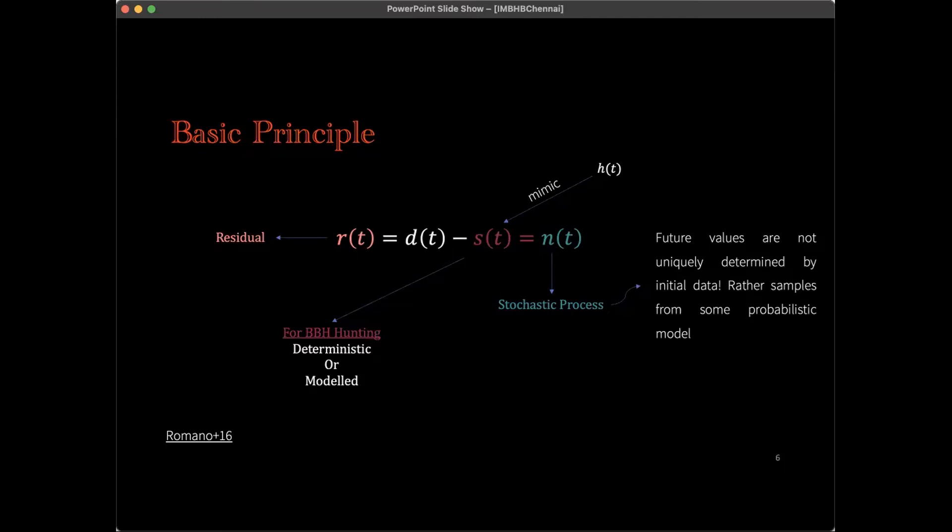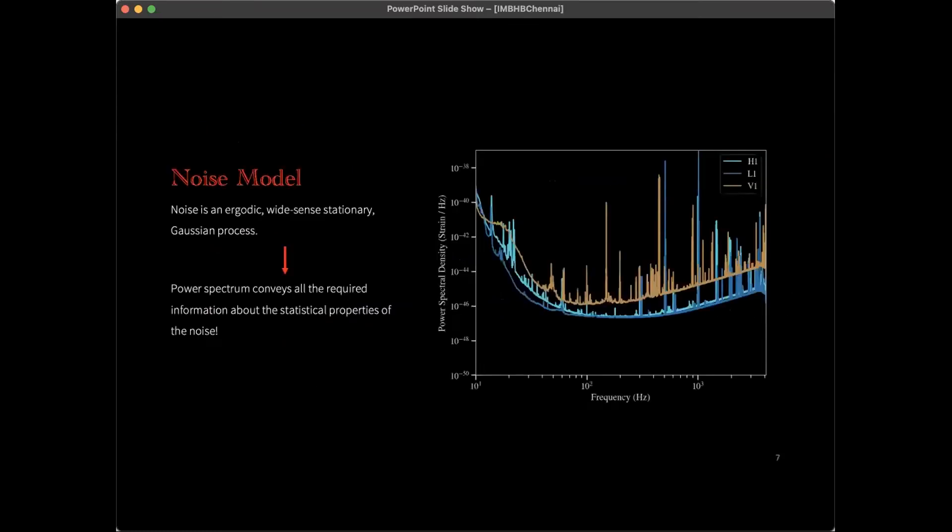Fortunately for us, we can make various simplifying assumptions. For example, we can assume that the noise process is Gaussian. We can also assume that the noise in the detector is largely uncorrelated if the two detectors are at two different geographical sites, because most noises are of local origin. We can also assume that the detector noise is wide-sense stationary, and we can assume it to be ergodic, meaning that we can swap between time averages and ensemble averages.